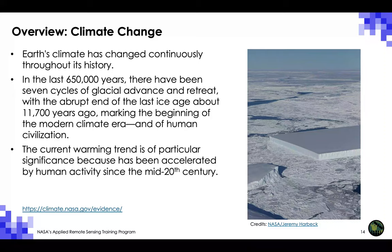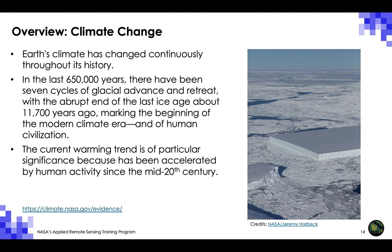Natural variability and climate fluctuations have always been part of Earth's history. In the last 650,000 years, there have been seven cycles of glacial advance and retreat, with the abrupt end of the last ice age about 11,700 years ago marking the beginning of the modern climate era. The last glacial maximum, roughly from 26,500 to 20,000 years ago, was when ice sheets were at their greatest extent, covering much of North America, northern Europe, and Asia, causing drought, desertification, and a large drop in sea levels.